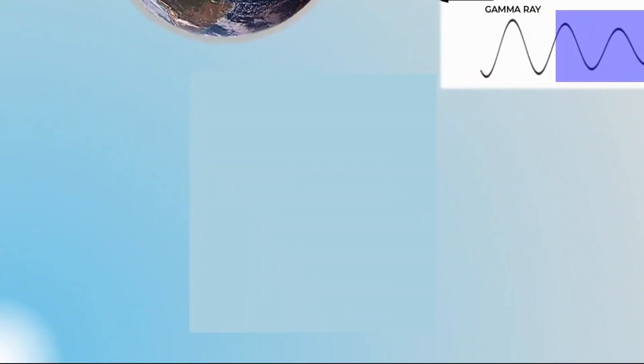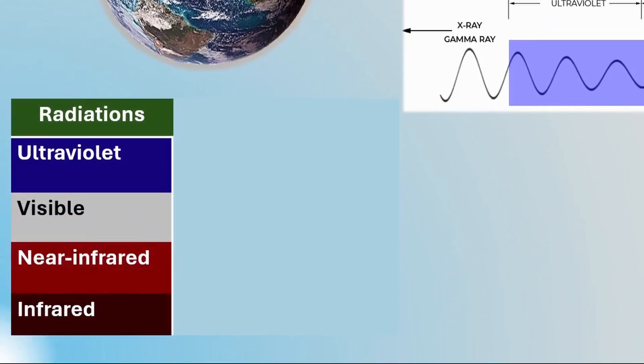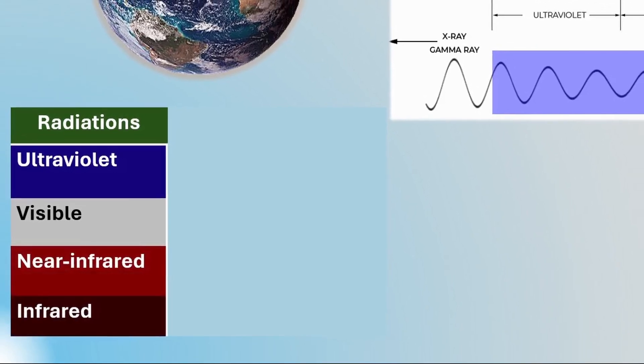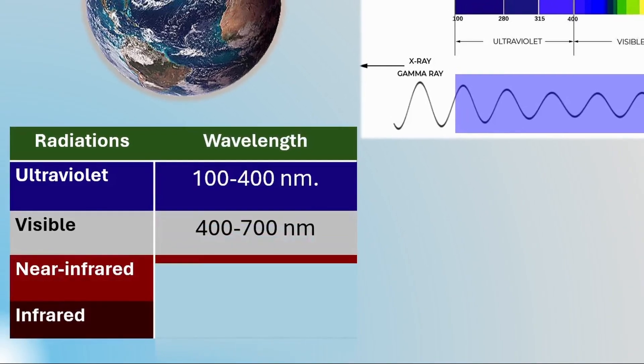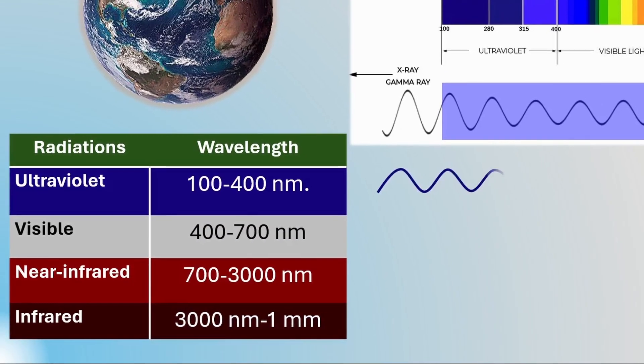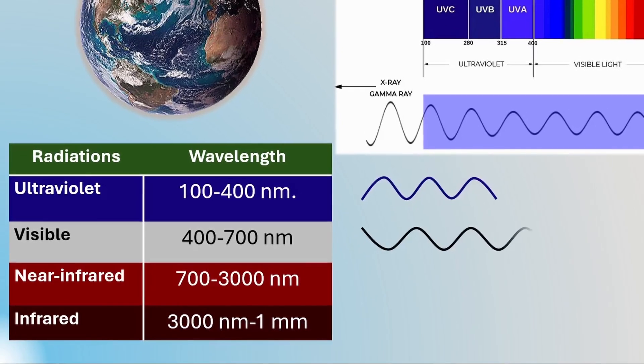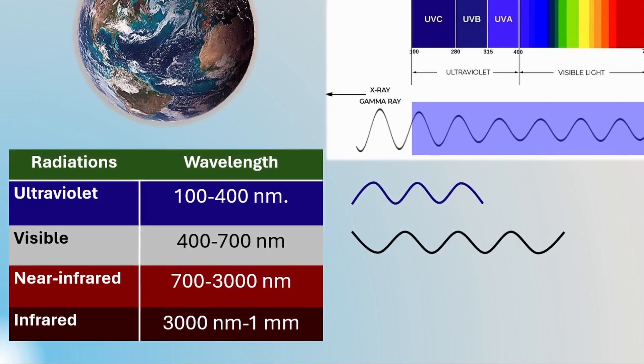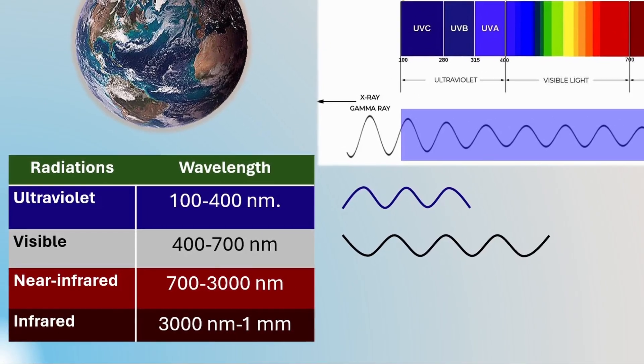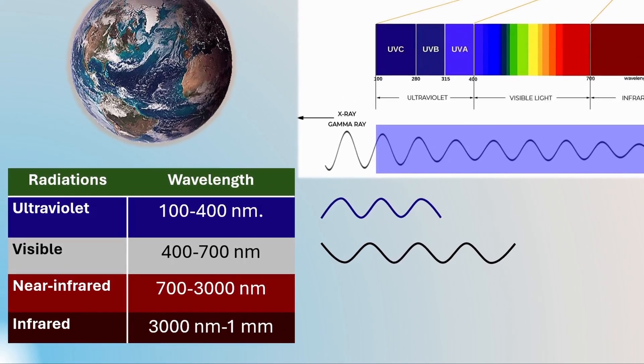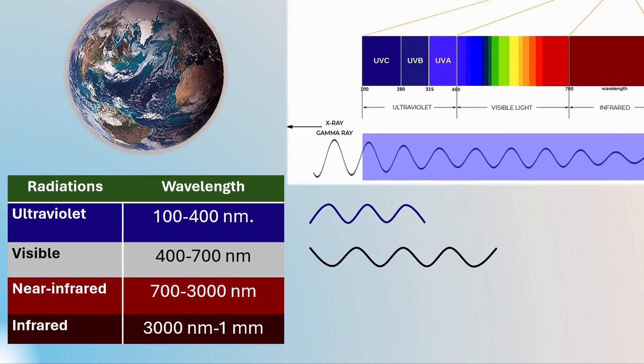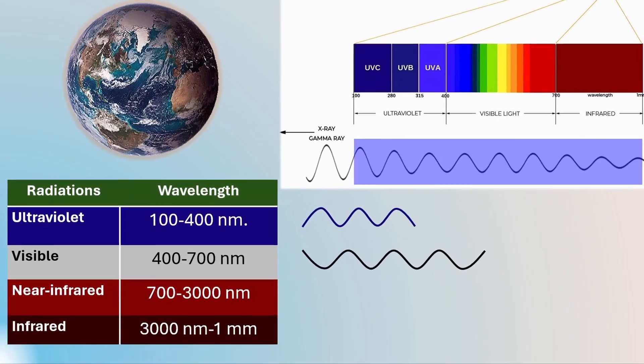The spectrum of solar radiations reaching the earth's atmosphere can be roughly divided into ultraviolet, visible light, near infrared, and infrared. Ultraviolet has wavelengths from 100 to 400 nm, visible light 400 to 700 nm, near infrared 700 to 3000 nm, and infrared radiations have wavelengths from 3000 nm to 1 mm.